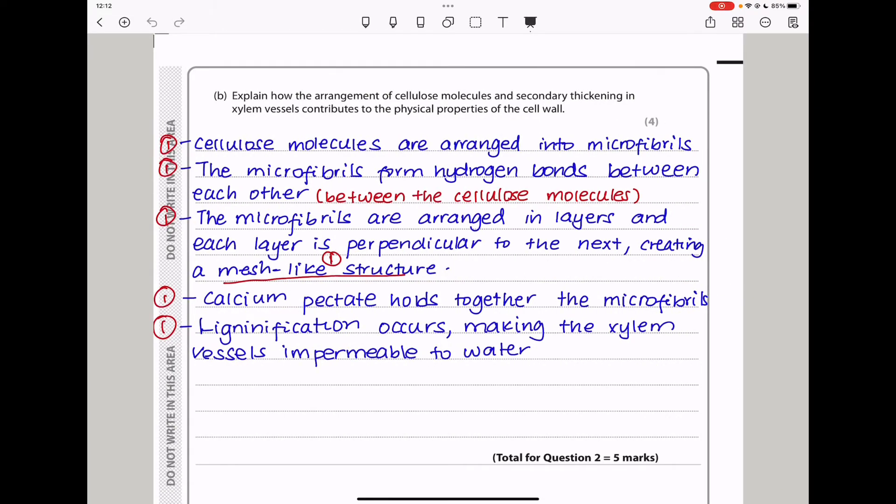Here they say explain how the arrangement of cellulose molecules and secondary thickening in xylem vessels contributes to the physical properties of the cell wall. We know that cellulose molecules are arranged into microfibers, and these microfibers have hydrogen bonds between them so that they can bond to each other. Also, microfibers are arranged in layers. Each layer, they arrange parallel, but the next layer is perpendicular to the previous layer. So that kind of arrangement creates a mesh-like structure. Also, they contain calcium pectin, which holds together the microfibers. Because lignification also occurs, making the xylem vessels impermeable to water, and that makes it easier for the xylem vessels to transport water across the plant. This brings us to the end of question two.